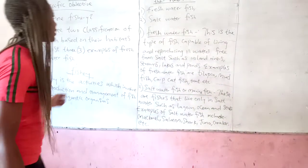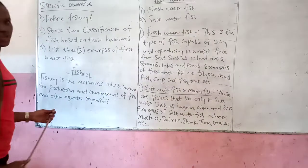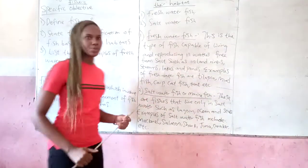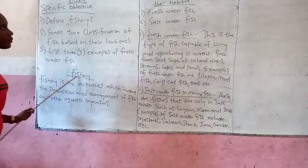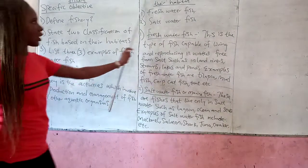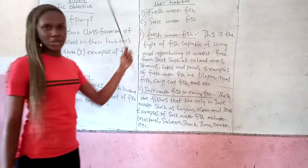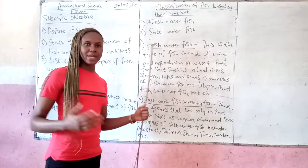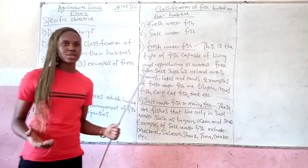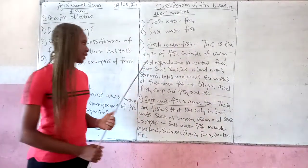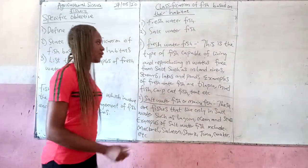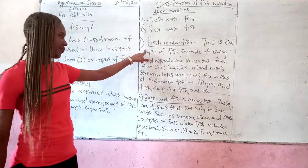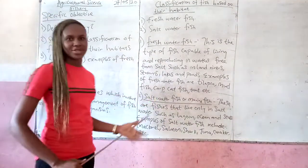With the above-listed explanation, I believe that you must have understood the meaning of fishery, the classification of fishes which is based on their habitat — that is, their dwelling place — the types of water where we see those fishes, and the examples of these fishes: the freshwater fish and the saltwater fish. Thank you.